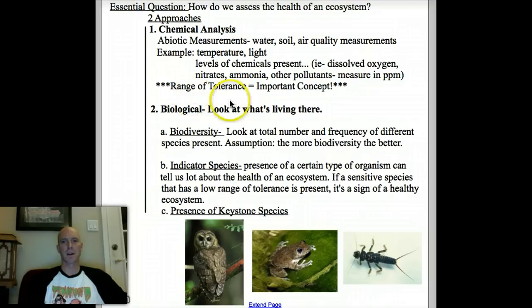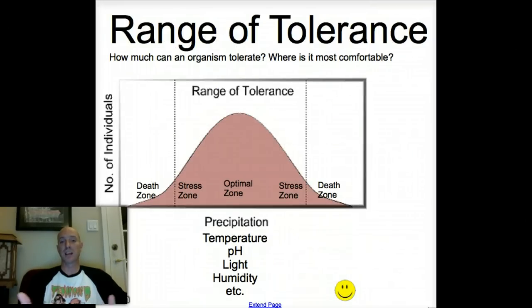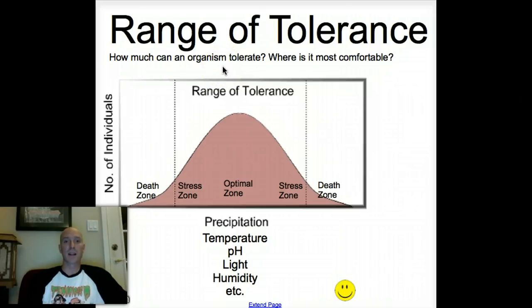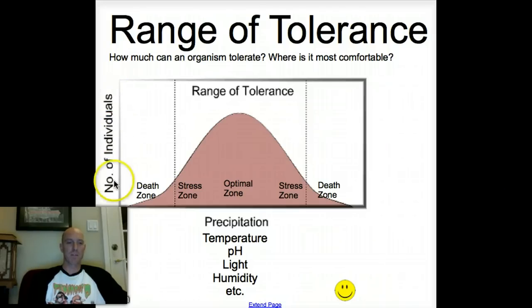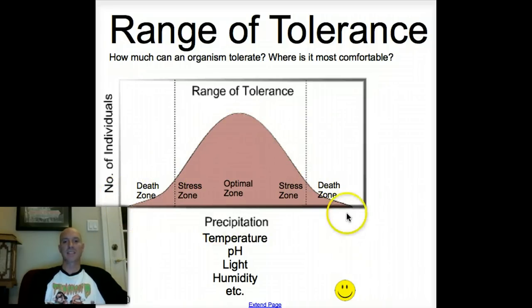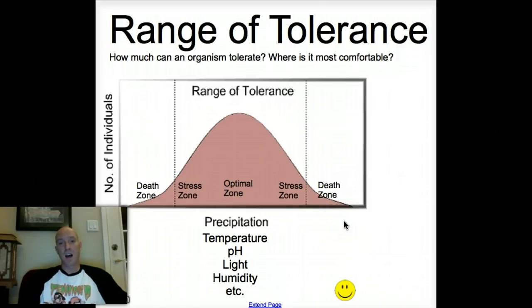I've written it down here, and I'd suggest jotting this chart in — maybe hit pause. The idea is really getting into how much an organism can tolerate, and where is it going to be thriving. We've got a graph here with the number of individuals, or the level of population, on the y-axis, forming a big bell-shaped curve. Along the x-axis, it can be many different things — precipitation, light levels, pH, humidity.